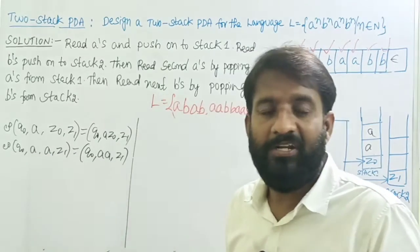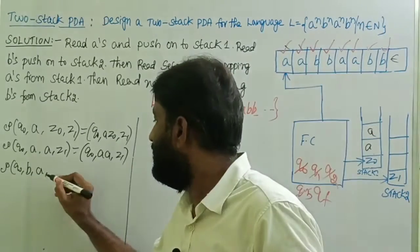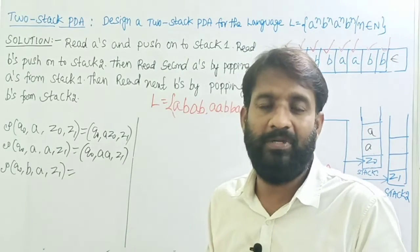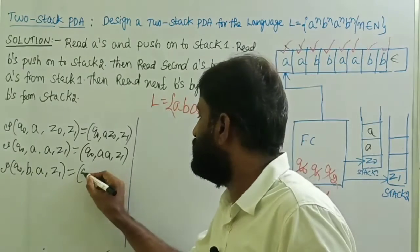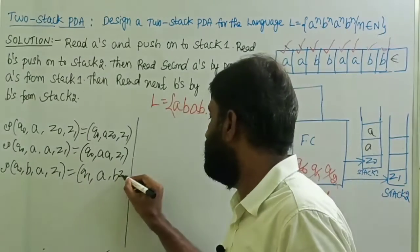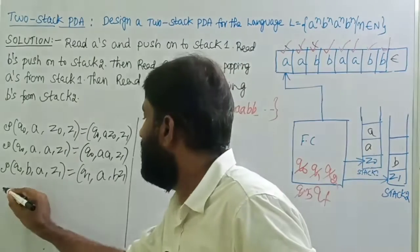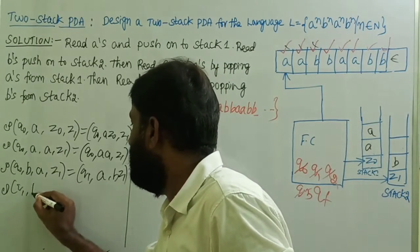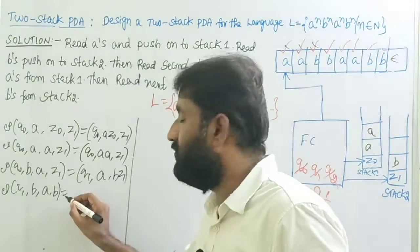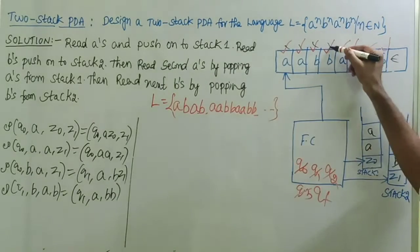Transition of q0 with input 'b': top of stack one is 'a', top of stack two is z1. Change state from q0 to q1 because now we are reading b's and must show the configuration difference. Don't do any operation on stack one — so it remains 'a' — but add 'b' onto stack two. That is: δ(q0, b, a, z1) = (q1, a, bz1). Then for one more 'b': transition of q1 with input 'b', top of stack one is 'a', top of stack two is 'b' — add 'b' onto stack two without doing any operation on stack one. That is: δ(q1, b, a, b) = (q1, a, bb). This 'b' is also added onto stack two.